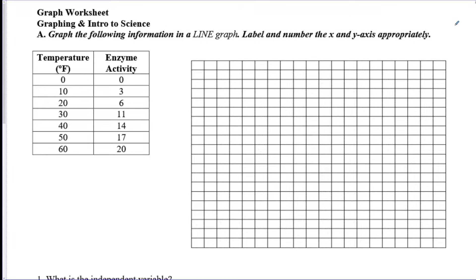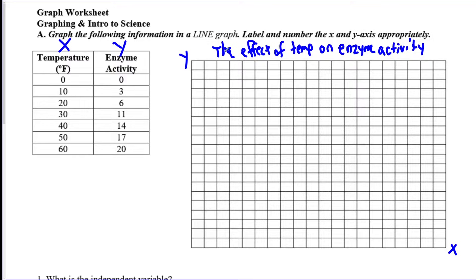So we got a basic data table on the left side. It says temperature and enzyme activity. The column on the left side is always your x and the column on the right is generally always your y, so we can label those on our graph here. x goes on the bottom, y goes on the side. A great way to do a title is to just write the effect of whatever the x is, so in this case it's temperature on whatever the y is, so in this case it's enzyme activity. That covers all your bases for a good title.